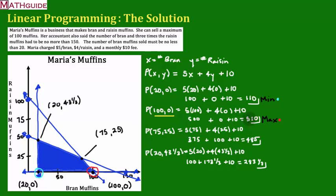And it looks like her profit is 510. The way it stands, she would have to sell 100 bran muffins, zero raisin muffins, for a maximum profit of 510.